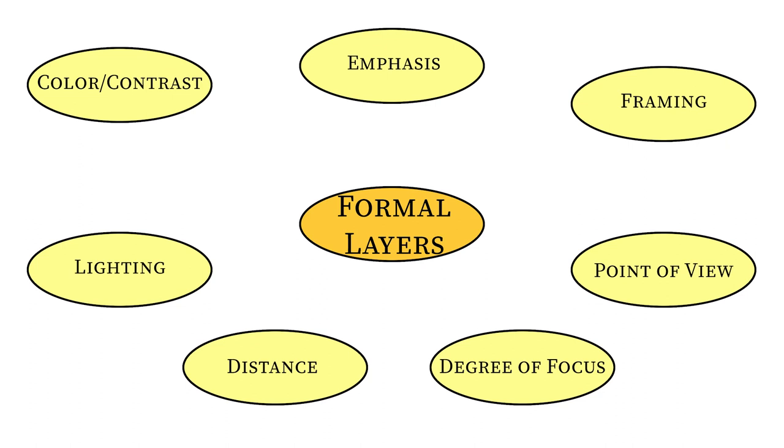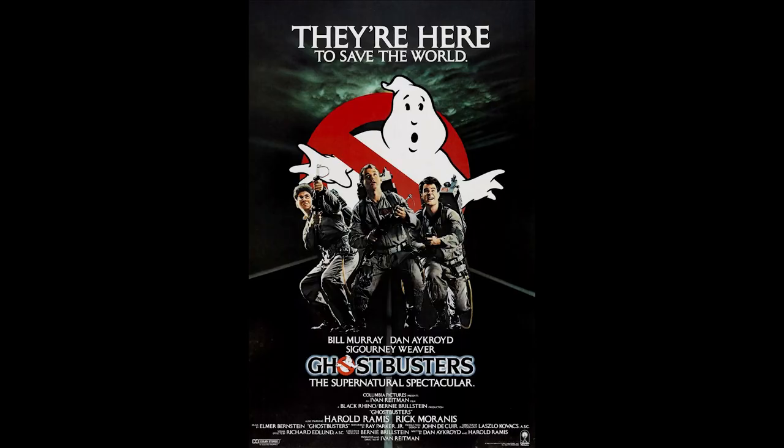Other ways might be through using contrast, highlighting it in some other way, through the actual framing of the image. For now, emphasis is just what is emphasized the most in the image. Then the next thing we have is the framing, which is just a fancy word for what is included in the image, as well as what might be excluded from the image. If you look at the framing here for this poster, all that's in the frame are these three Ghostbusters standing on what appears to be a road looking up. There's dark skies above them.